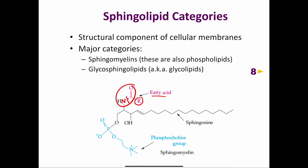The reason that sphingomyelins are phospholipids is because they have a phosphocholine group, with a phosphorus atom.